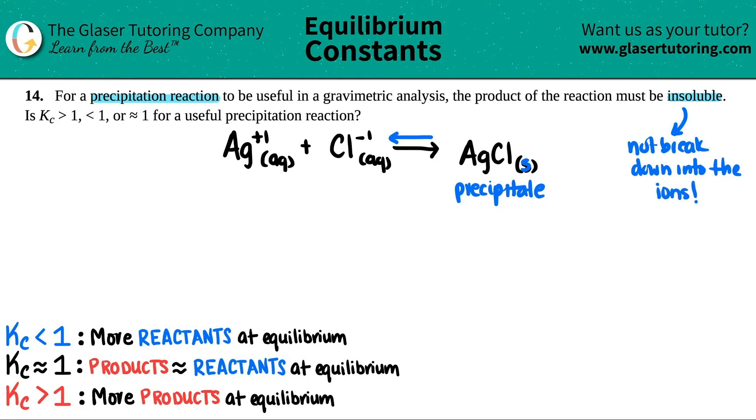It won't break down into its ions, which means that the reverse reaction going from AgCl to your ions is not really going to be happening. Generally speaking, the ions are going to come together and form the precipitate.